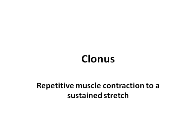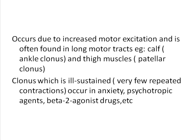Clonus can be defined as repetitive muscle contraction to a sustained stretch. When the clonus is sustained — that is, when you sustain the stretch and the contraction of the muscle repeatedly happens — you call it sustained clonus. This often occurs due to a significant increase in the spontaneous motor excitation which follows stretch of the muscle, and is often found in the long motor tracks: the calf, demonstrated as ankle clonus, and the thigh muscle, demonstrated as patellar clonus. Clonus is not seen in muscles which have shorter tracks, like the muscles of the hand or the upper limb.